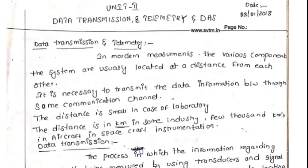Welcome to unit 2: data transmission, telemetry, and DAS in instrumentation. In modern measurements, various components are located at a distance from each other. Hence it is required to control any apparatus by transferring data only. For example, in a substation, the temperature of a transformer is monitored in the powerhouse by the engineer.